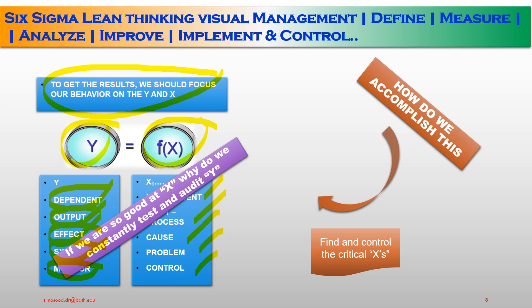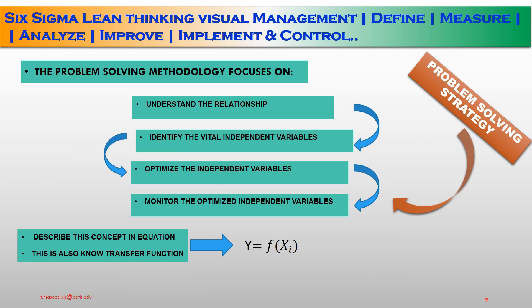Now we are going to discuss critical elements using the Six Sigma strategy. The problem solving method involves: first, understand the relationship; then identify the vital independent variables; then optimize the independent variables; then monitor the optimal independent variables. Describe the concept in equations — this is also known as a transfer function. As discussed, after applying transfer functions to the Y and X parameters, you will deliver the Y value you are looking for.